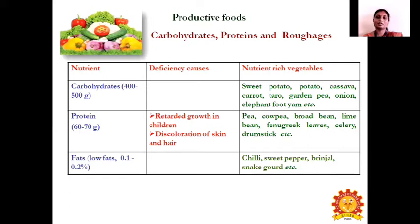Vegetables consist of two types of foods: productive foods and protective foods. Productive foods are rich in carbohydrates, proteins, and fats. Carbohydrate-rich vegetables containing about 400 to 500 grams per kilogram include sweet potato, potato, cassava, carrots, taro, garden peas, onion, and elephant foot yam. Protein-rich vegetables with 60 to 70 grams average protein include peas, cowpea, dried beans, lima bean, fenugreek leaves, celery, and drumstick.